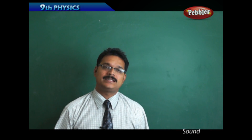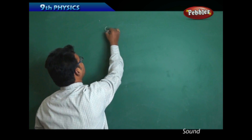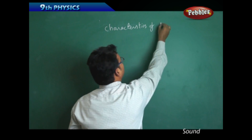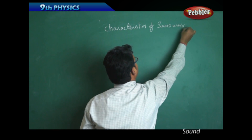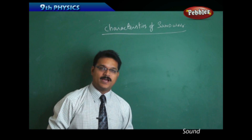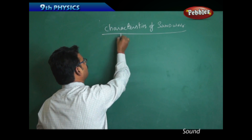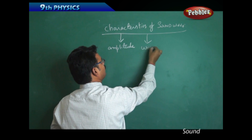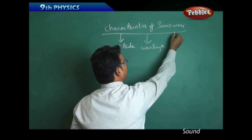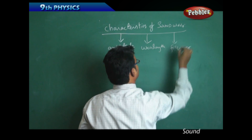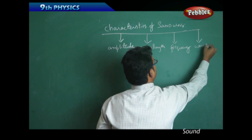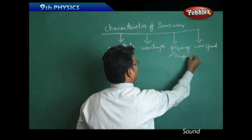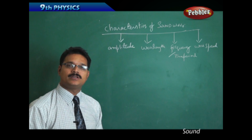Now we discuss characteristics of sound waves. Characteristics are nothing but properties of sound waves. Generally we have four types: number one, amplitude; two, wavelength; three, frequency; and four, wave speed. We can also write time period along with frequency. So we have four types of characteristics.